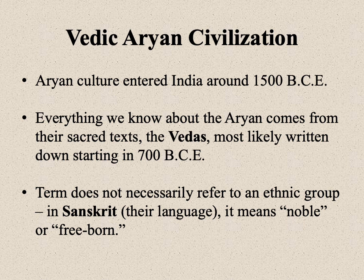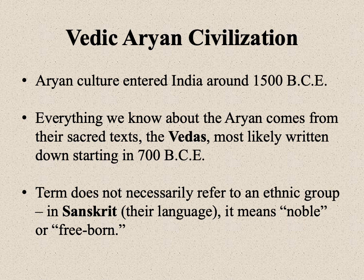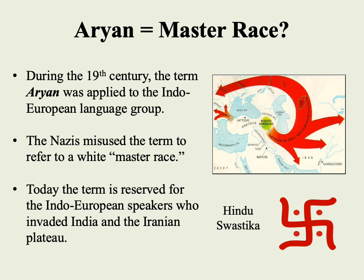The term Aryan is a bit tricky. It doesn't really refer specifically to an ethnic group or even a linguistic group. The term means 'noble' or 'freeborn' in Sanskrit, their literary language. It could actually encompass a large number of different ethnicities. Some of you might be thinking of the association with the Nazis from the 1930s and 40s, where the term Aryan referred to this concept of a master race — the idea that the Germanic people were the Aryan people and were superior to others. This really represents a misappropriation of a term that up until then had a more legitimate application.